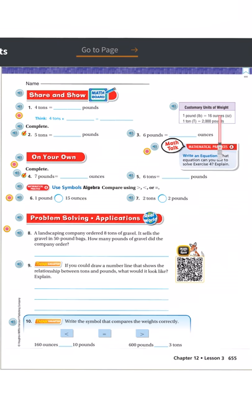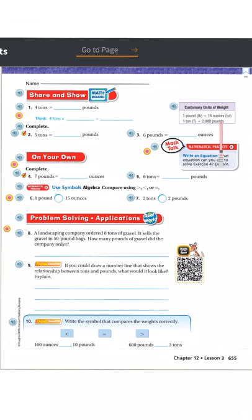For customary units of weight in this chapter and on Mathspace, we're only looking at pounds, ounces, and tons. There are other customary units of weight but they're not commonly used for the average person. For us, we really just have to look at these three.